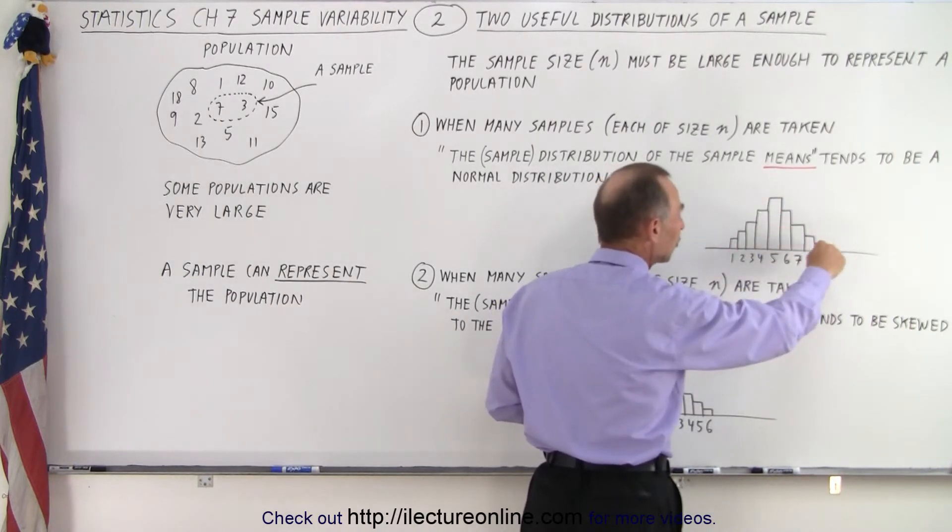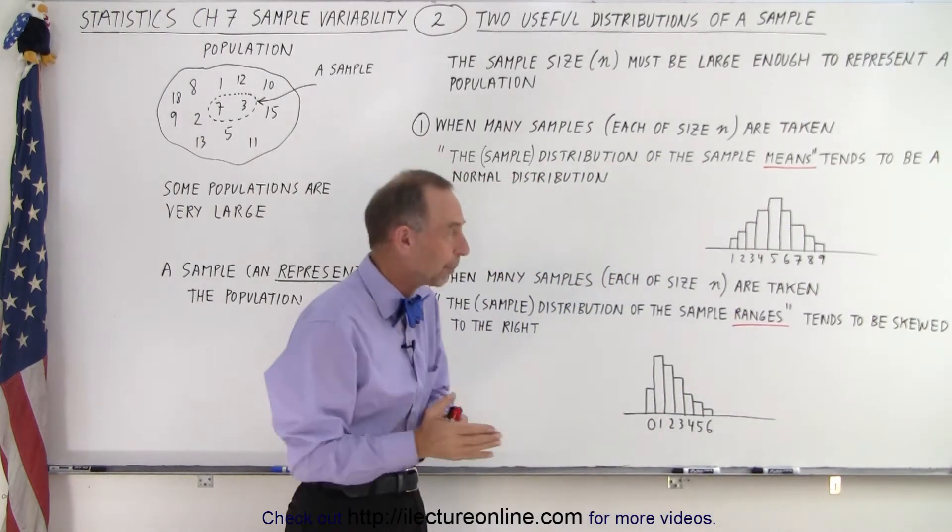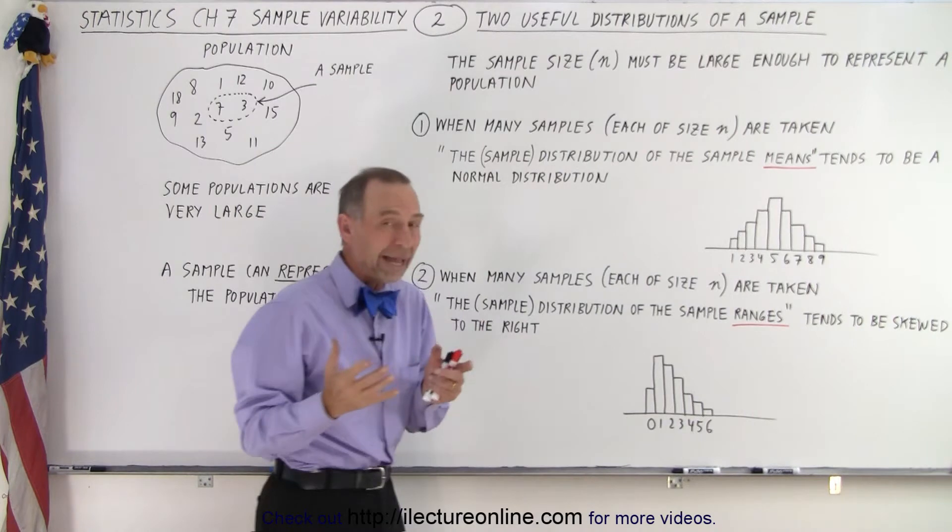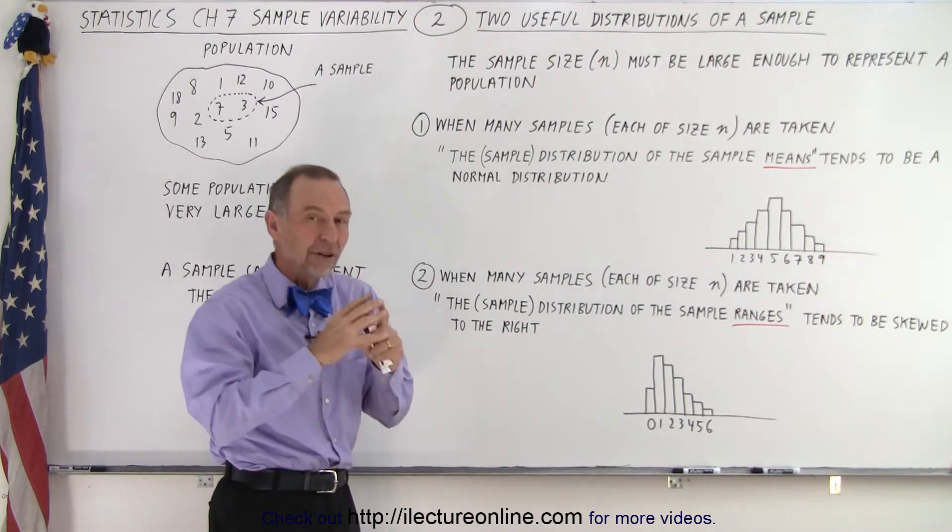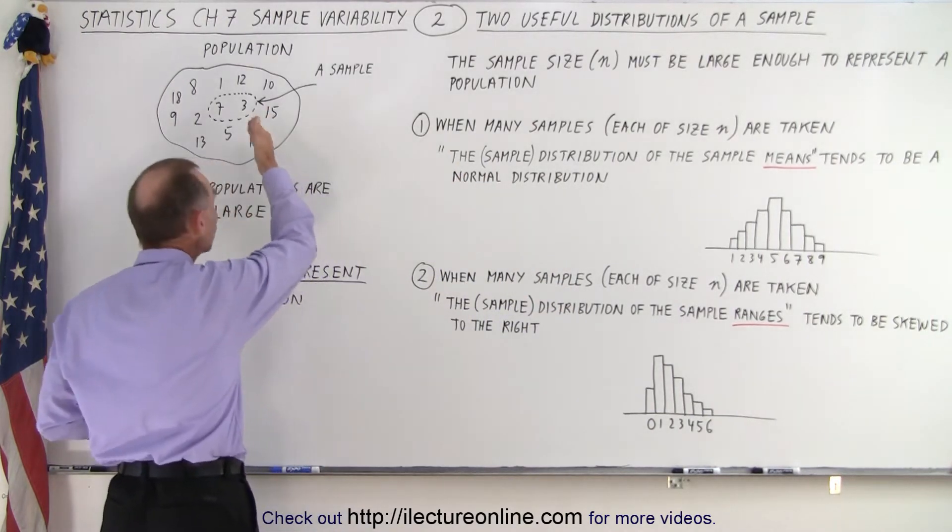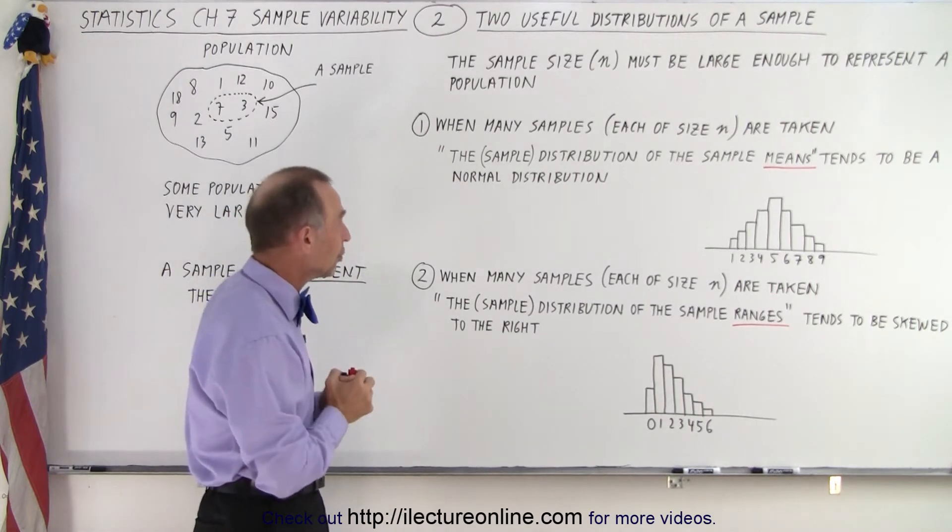And you can see that the distribution of the means of the sample, the averages of the sample, becomes a normal distribution as well. So that's one way in which we can find a representative average or representative means of all the samples, which then closely correlates to the sample or to the population mean and we'll show you later how to do that.